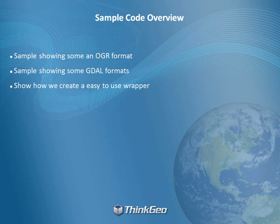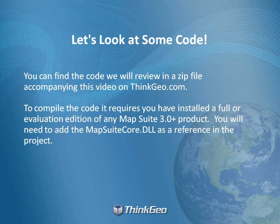We're going to review the sample code overview before we jump in. We'll show some OGR formats being implemented, some GDAL formats, and how we created a wrapper around one of the FDO feature sources to make it easier to use. You can find the code in a zip file accompanying the video on thinkgeo.com — more specifically in the discussion forums and the developer's blog. It requires a full or evaluation edition of any of the Map Suite products, and you'll need to add the Map Suite Core DLL as a reference.